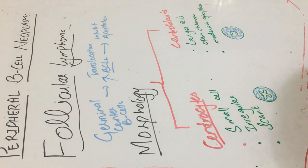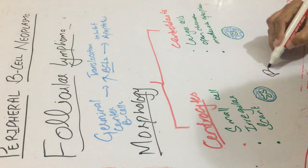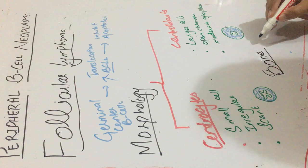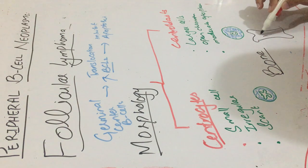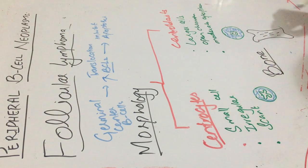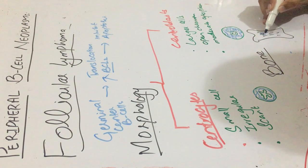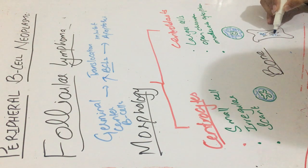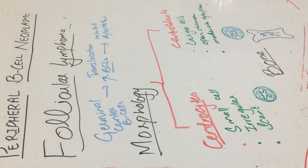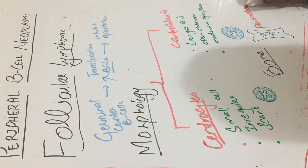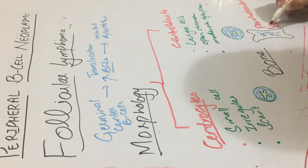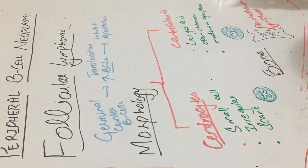Follicular lymphoma also involves the bone marrow. In bone there are trabeculae, and around these trabeculae there would be lymphoid aggregates. These are known as paratrabecular lymphoid aggregates — lymphoid aggregates located around the trabeculae in the bone marrow.